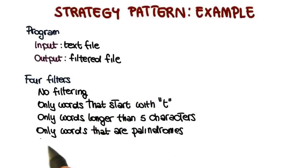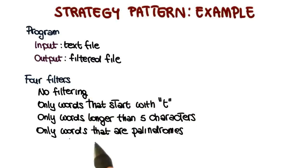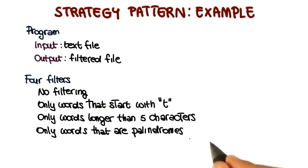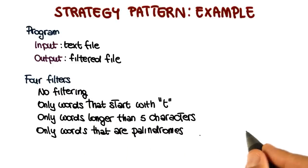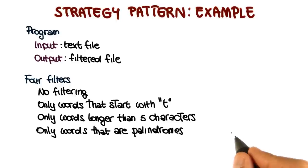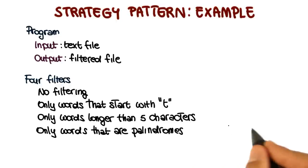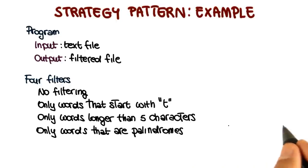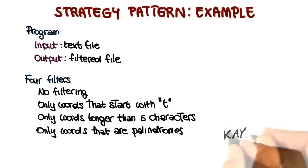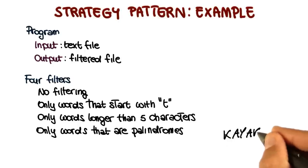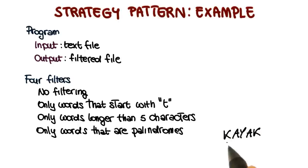The fourth filter will produce as output only words in the text file that are palindromes. In case you don't know what a palindrome is, a palindrome is a word that is the same whether you read it from left to right or from right to left. For example, the word 'kayak' — you can read it in this direction or in this direction, and it's exactly the same word.